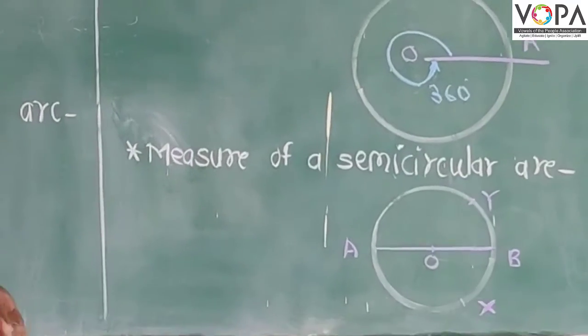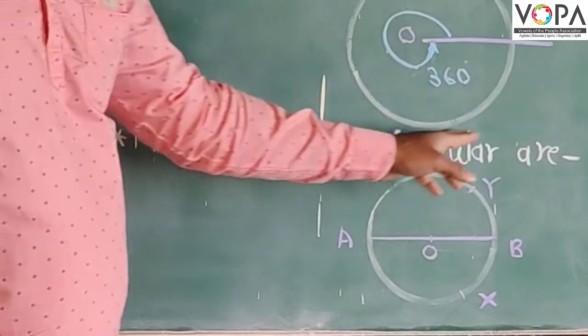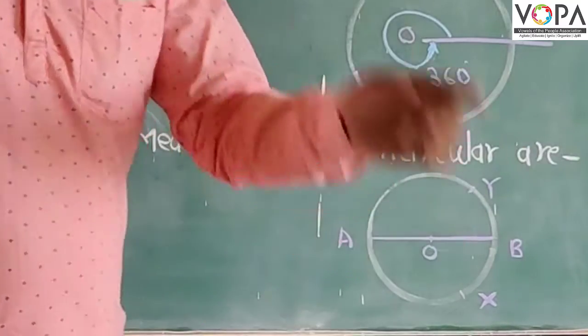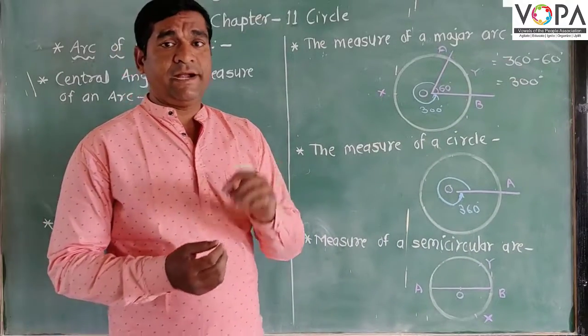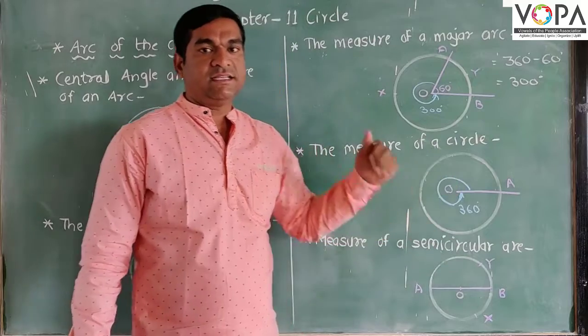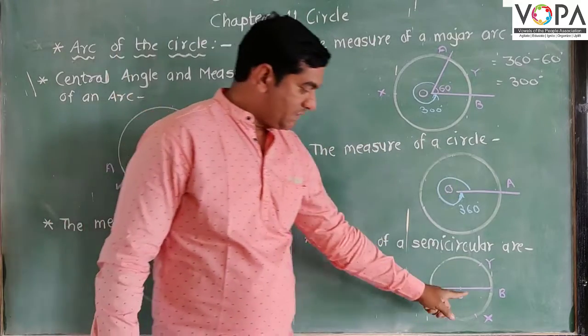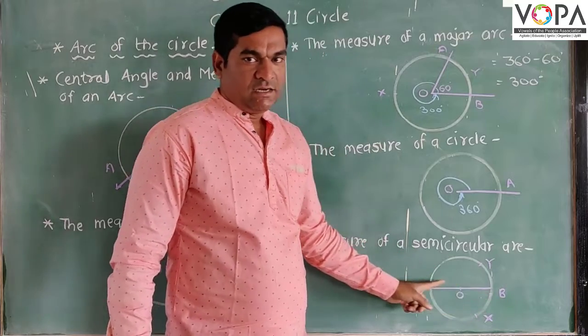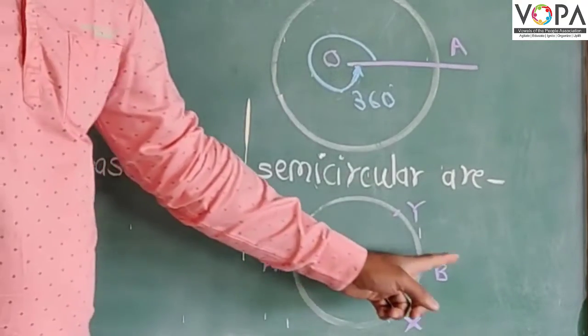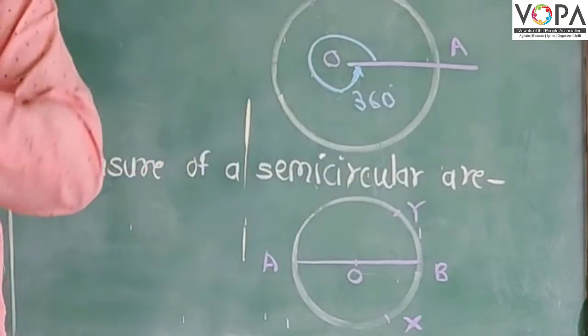And the last topic is here, measure of a semicircular arc. First, semicircular arc is made up by the diameter. And, earlier in the chapter you find a definition of diameter. The biggest chord which is passing from the center of the circle is called as a diameter. And because of the diameter, we get two parts of the circle.